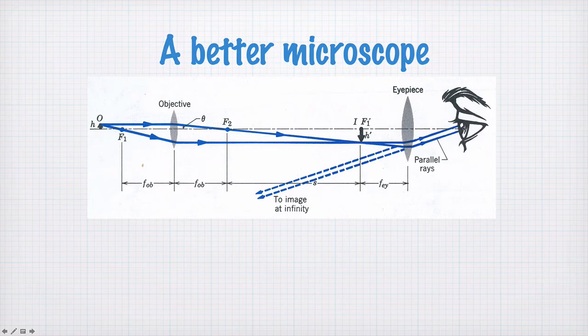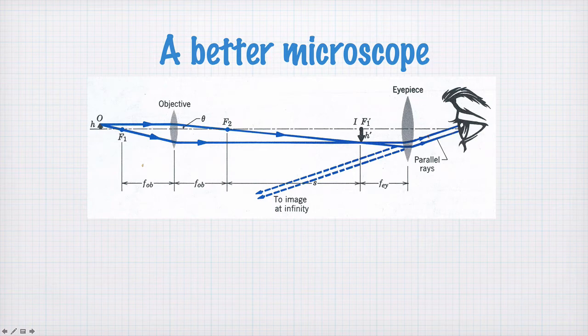What this means is that your eyes perceive an image that is somewhere off in infinity, and this is very comfortable for your eyes to see. It's important that you make these microscopes nice to use, because if you want to be staring down them all day in a lab, you don't want to be squinting and straining your eyes to look at something which appears to be close. There is an enormous advantage from an ergonomics perspective in making the object appear at infinity, because that's when your eyes are relaxed.